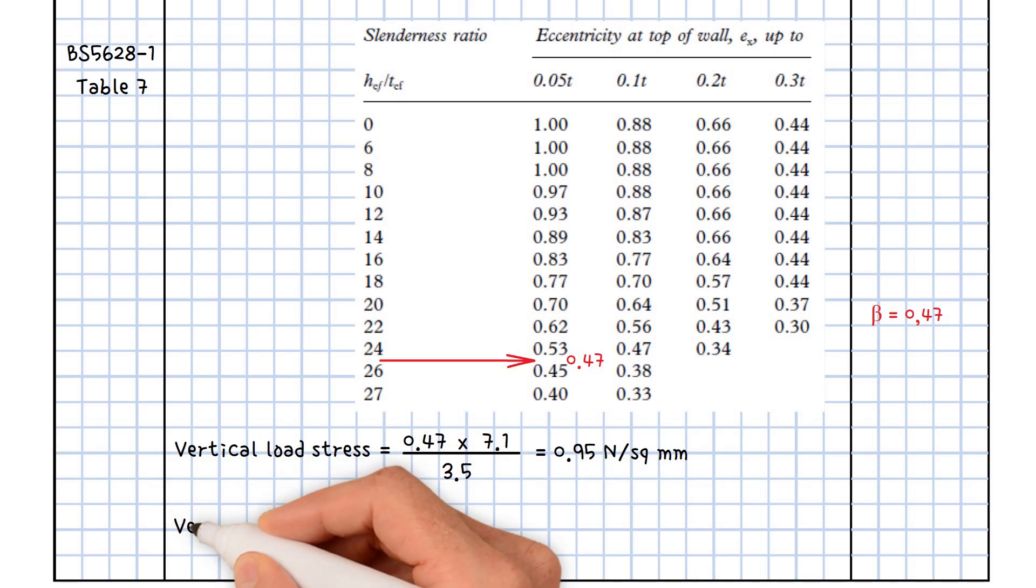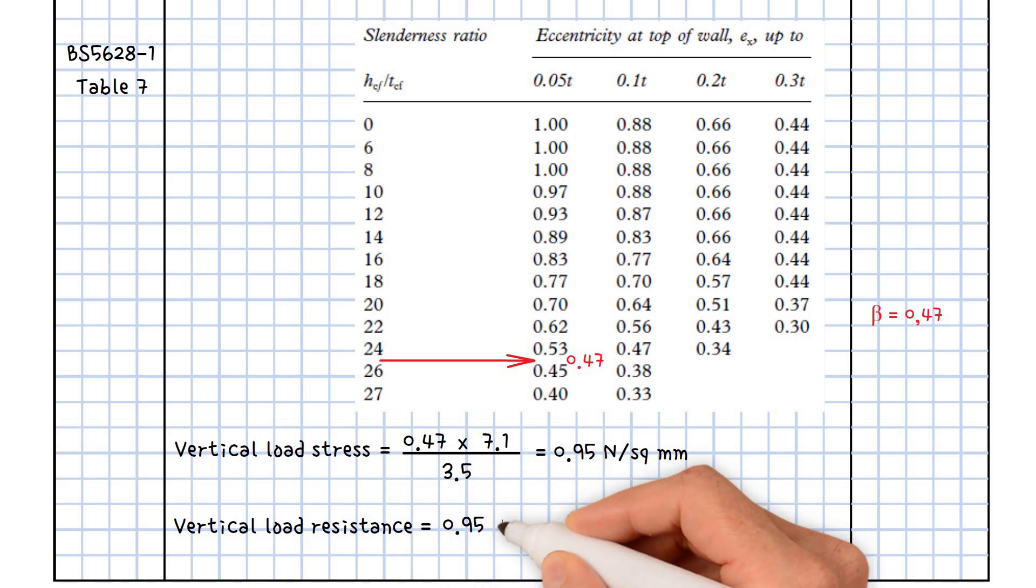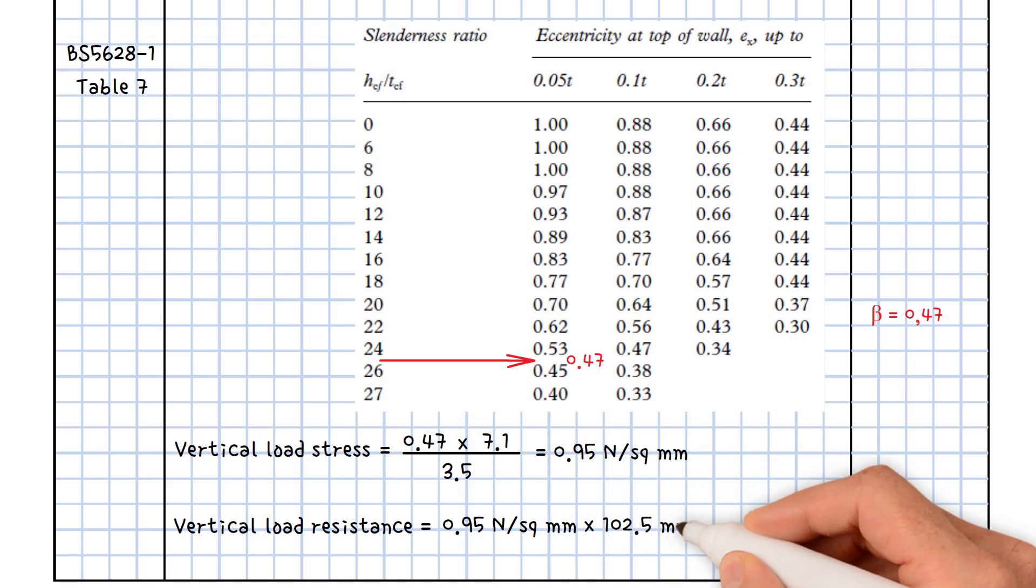Therefore, the vertical load resistance of the wall equals 0.95 newton per square millimeters multiplied by 102.5 millimeters wall thickness. This results in a value of 97.4 kilonewtons per meter.